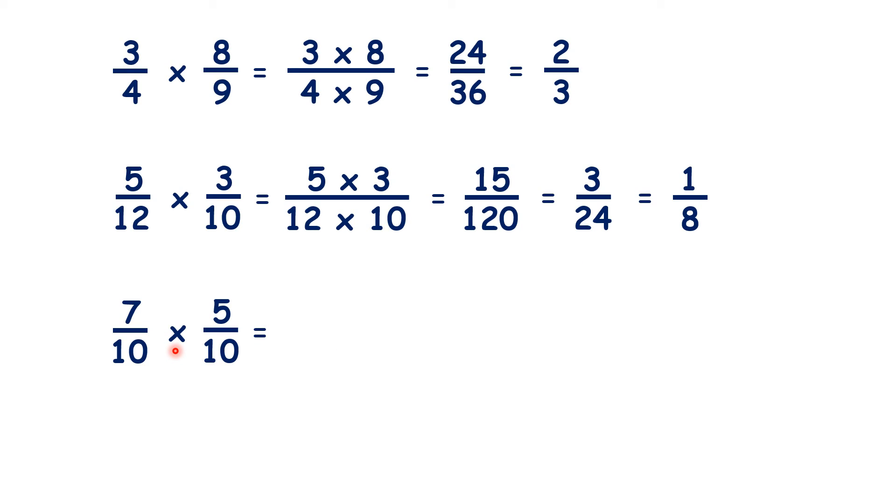Finally, for this last question, we have 7 times 5 over 10 times 10, so that's 35 over 100, which we can simplify to 7 twentieths.